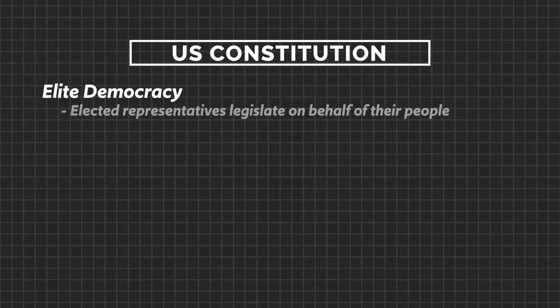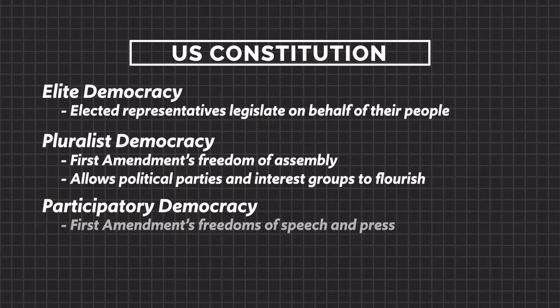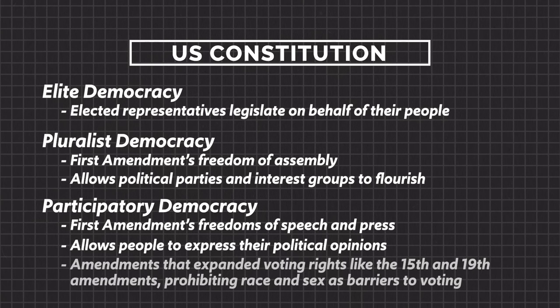We can also see the tension between these three models in three foundational documents: the Constitution, Federalist Ten, and Brutus One. In the Constitution, you can see elite democracy in the fact that elected representatives legislate on behalf of their people. Pluralist democracy appears in the First Amendment's freedom of assembly, allowing political parties and interest groups to flourish. Participatory democracy shows up in the First Amendment's freedom of speech and press, and in amendments that expanded voting rights like the 15th and 19th Amendments prohibiting race and sex as barriers to voting.